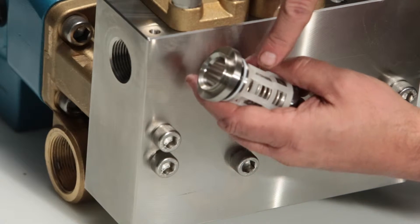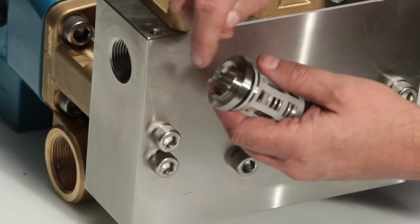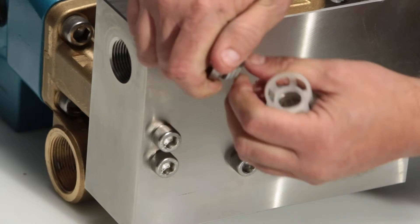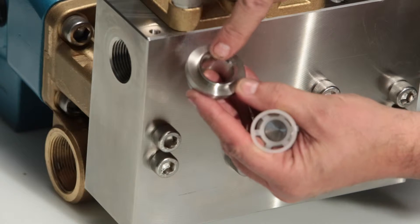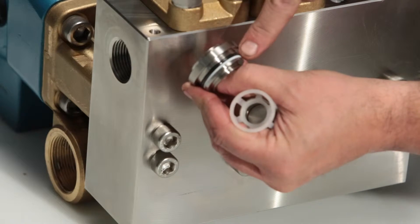To separate the valve seat from the inlet retainer, you can pull apart by hand. Inspect the discharge seat for pitting where the valve rests, as well as the o-ring and backup ring for any damage.